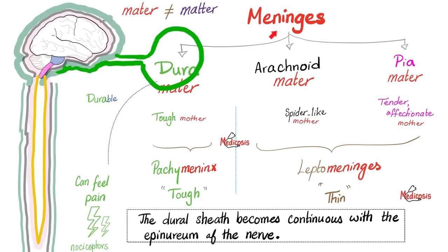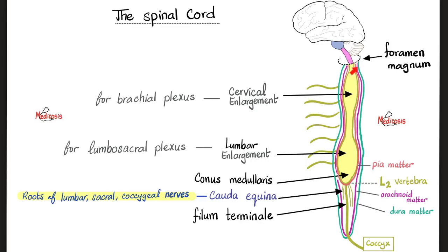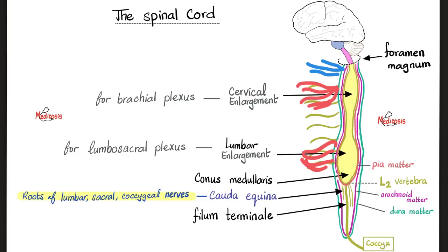The spinal cord is the continuation of the medulla oblongata, which exits the skull through the foramen magnum. It has cervical, thoracic, lumbar, sacral, and coccygeal parts. The cervical region has a cervical plexus, the thoracic region has the brachial plexus, and the lumbar region has the lumbosacral plexus. Because the brachial and lumbosacral plexuses are so large, there are enlargements in the spinal cord at those regions.